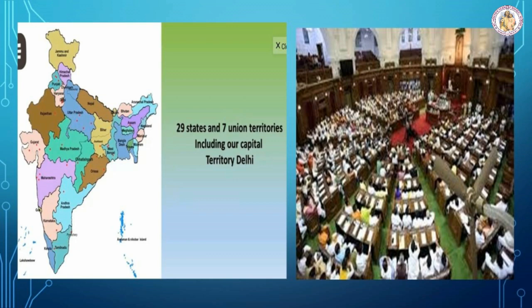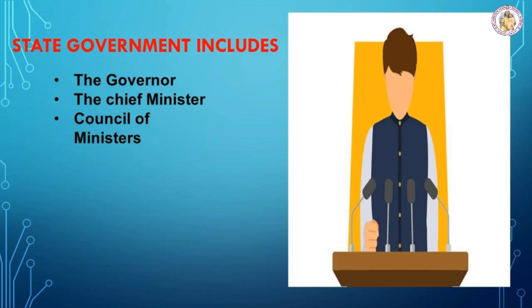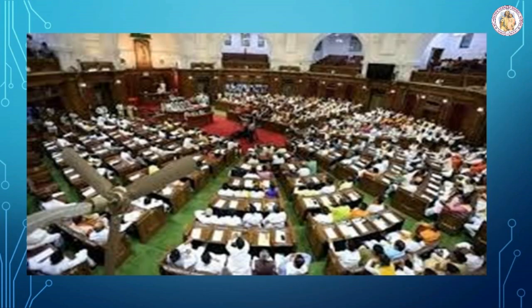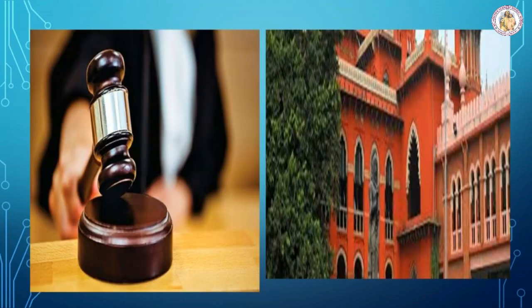Let's recall what we have learned so far. India is divided into 29 states and 7 union territories, and each state has a legislative assembly. The state executive comprises the governor and the chief minister with his council of ministers. The governor, appointed by the president for five years, is the head of the state and an integral part of the state legislature. The real executive power in a state rests with the chief minister, who is the leader of the majority party. The chief minister and the council of ministers are collectively responsible to the state legislature. The high courts are the highest judicial organs at the state level and have jurisdiction over the whole state.